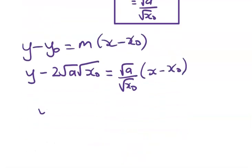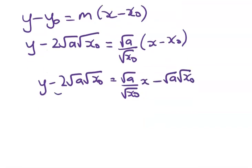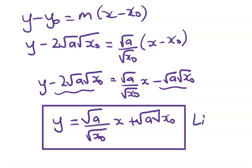And straight away, you can see that that's going to clean up quite well. So we get root a over root x naught x minus root a root x naught. Now we've got some like terms going on here. So we have y is equal to root a over root x naught x plus root a root x naught. Okay, and we're going to put that into a box. And that's line one.